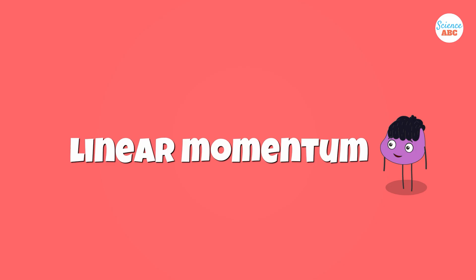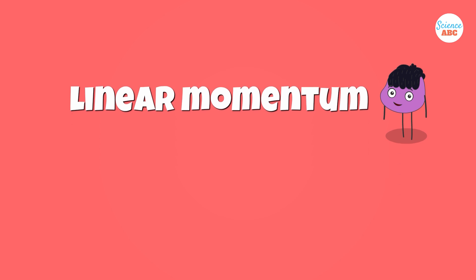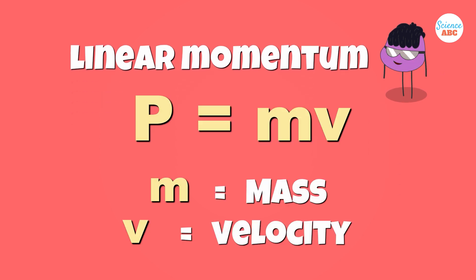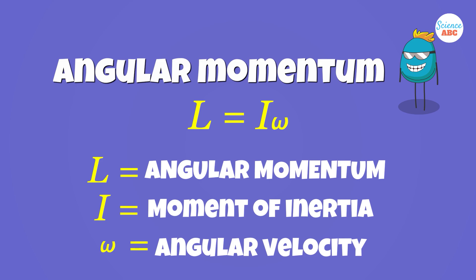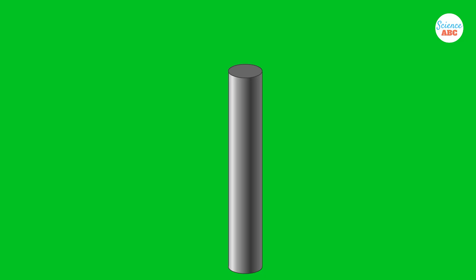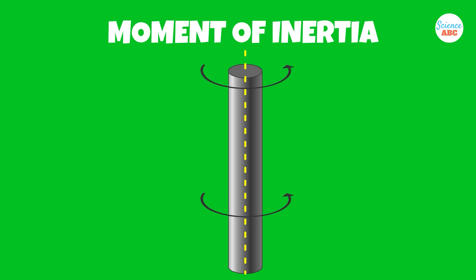While linear momentum is the product of an object's mass and velocity, angular momentum is the product of the moment of inertia and the angular velocity of the object. The moment of inertia can be considered as rotational mass, telling us how the mass is distributed relative to the axis of rotation.